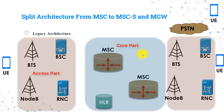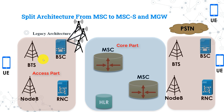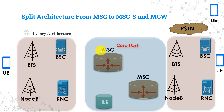The core here is CS Core. The access part consists of BTS, Base Transceiver Station, and BSC, Base Station Controller. BTS is mainly used for coverage of the cell and sending and receiving signals with the mobile station, while BSC is used for controlling these BTSs. In the core, we have the MSC and HLR — the two main nodes in CS networks.